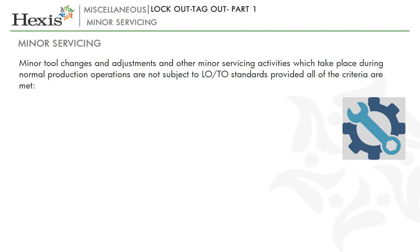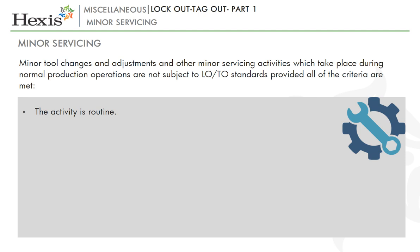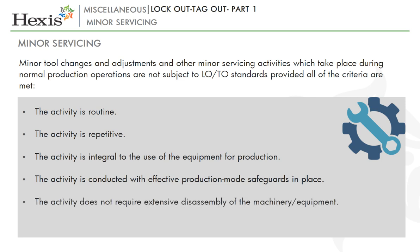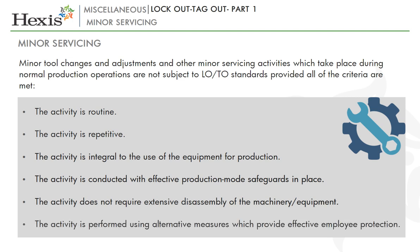Minor tool changes and adjustments and other minor servicing activities which take place during normal production operations are not subject to LOTO standards provided all of the following criteria are met: the activity is routine, performed as part of a regular and prescribed course of action, and in accordance with established practices or industry standards. The activity is repeated regularly as part of the production process or cycle. The activity is integral to the use of the equipment for production. The activity is conducted with effective production mode safeguards in place. The activity does not require extensive disassembly of the machinery or equipment. The activity is performed using alternative measures, tools or guarding which provide effective employee protection.